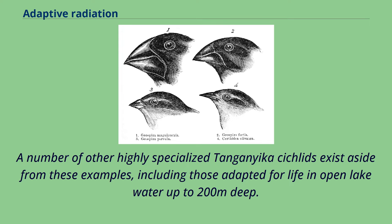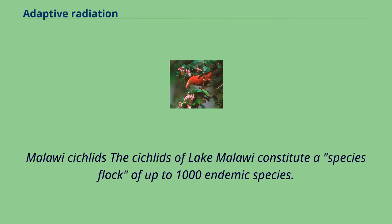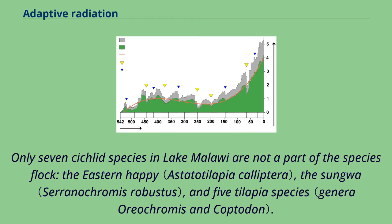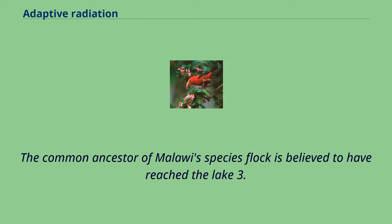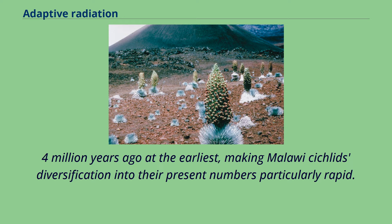The cichlids of Lake Malawi constitute a species flock of up to 1,000 endemic species. Only 7 cichlid species in Lake Malawi are not part of the species flock — the eastern haplochromis, the sungwa, and 5 tilapia species. All of the other cichlid species in the lake are descendants of a single original colonist species, which itself was descended from Tanganyikan ancestors. The common ancestor of Malawi's species flock is believed to have reached the lake 3.4 million years ago at the earliest, making Malawi cichlids' diversification into their present numbers particularly rapid.